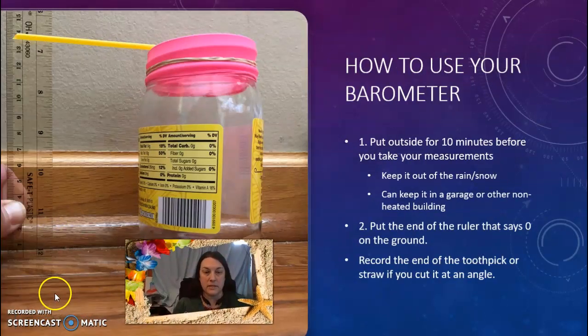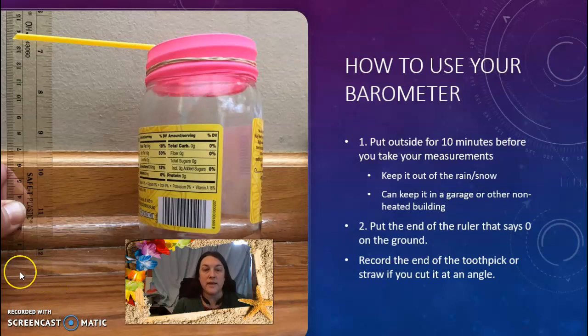When you take your measurements, you are going to make sure that the zero is on the ground where you are measuring from. And we are going to measure not in inches because it's science class. We're going to measure in centimeters or millimeters. So put the end of the ruler that says zero on the ground and then you're going to record where the end of your toothpick is, or if you cut your straw at an angle like mine is, where the end of your straw is.